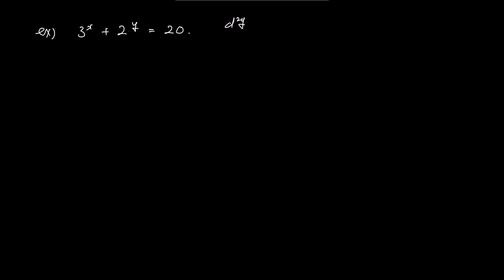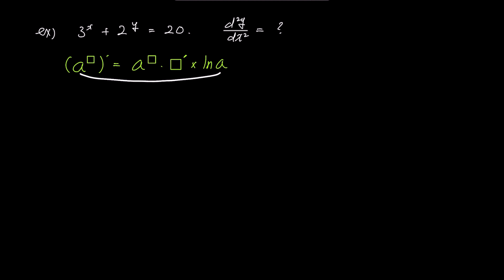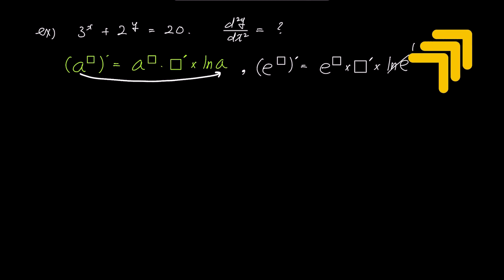Here we have 3 to the power of x plus 2 to the power of y is 20, and we want to find the second derivative using implicit differentiation. First, let's introduce an easier way to differentiate exponential functions. The derivative of a to the power of box is a to the power of box times box prime times ln a. The ln a at the end comes from bringing the base a to the front. If we differentiate e to the power of box, it becomes e to the power of box times box prime times ln e, so the natural logarithm is always multiplied at the end. I have a detailed video explaining the derivative of exponential functions — please check the link in the top right corner.